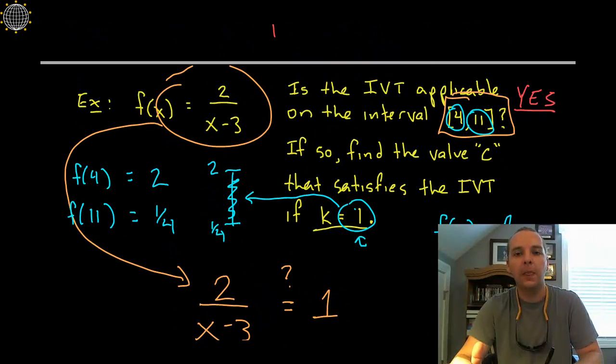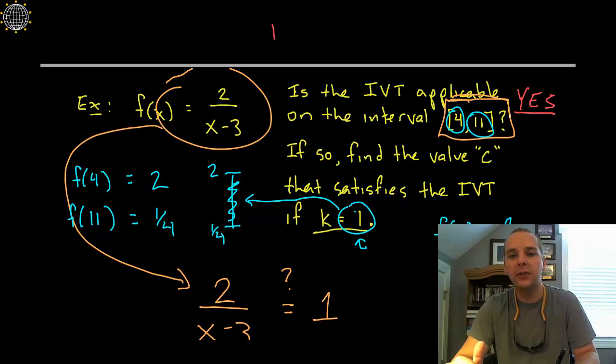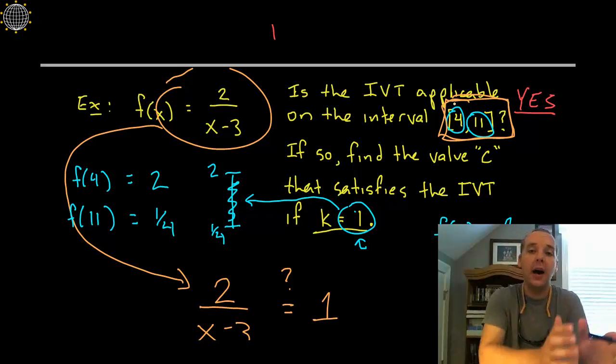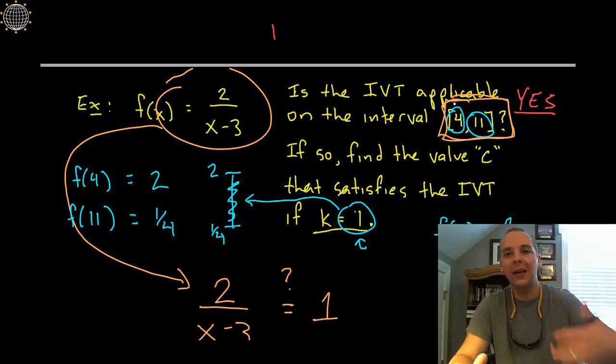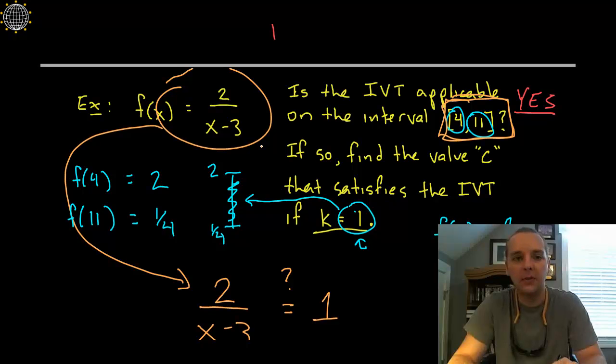Well you don't list both of them. What you have to do is you have to see which of those x values is in the interval. And so you would say 5, because 5 is in the interval from 4 to 11. Don't give extra answers, even if they make the function equal the k value, if they fall outside of your interval.